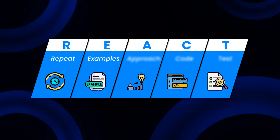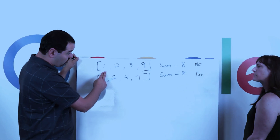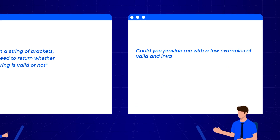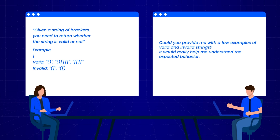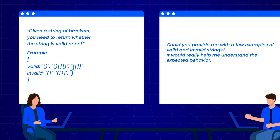Next step is E for Examples. This step is very important, but many candidates skip it because they are used to platforms like LeetCode where examples are already provided. In a real-world interview, you might need to ask for specific input and output examples. For our valid brackets problem, I would ask: 'Could you provide some examples of valid and invalid strings? It would really help me understand the expected behavior.' Many people try to come up with examples themselves, but I do not recommend it — we do not want to miss a chance to get a sneak peek into the interviewer's mind. The examples might confirm we are dealing with different types of brackets, that a single closing bracket without a matching opening bracket is invalid, and that brackets must close in the correct order.